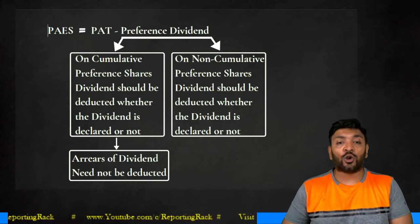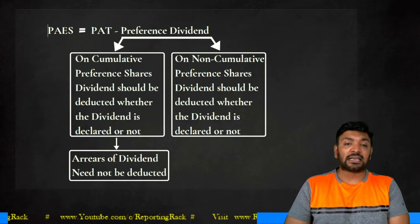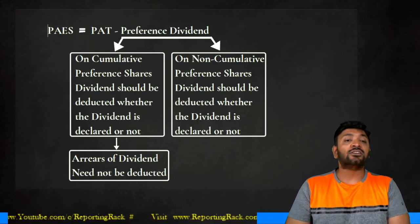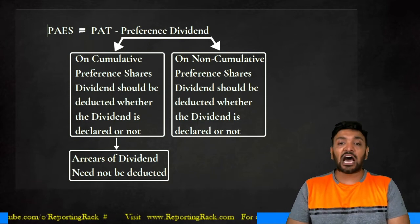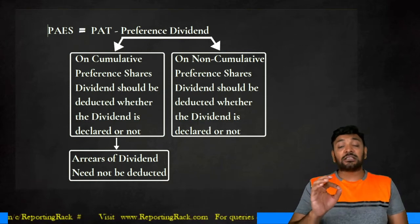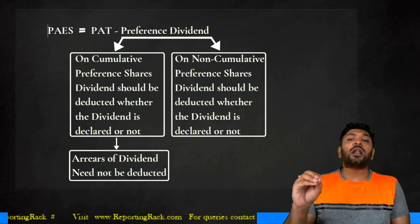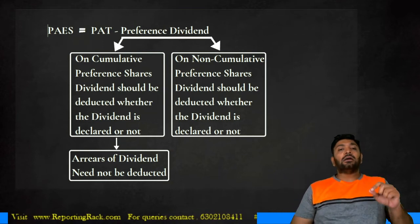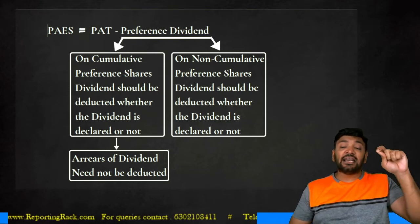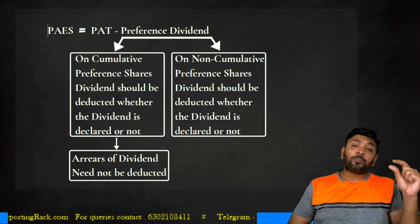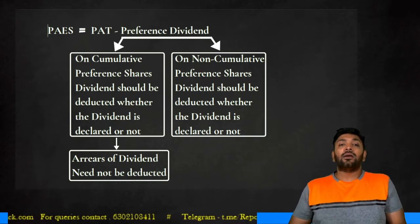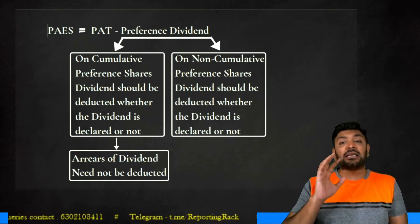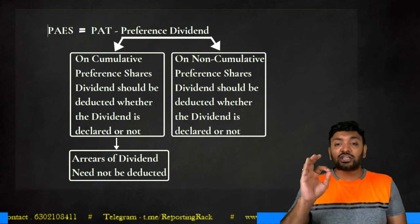Please make the correction in your notes: for non-cumulative preference shares, deduct only if the dividend is declared. If not declared, you are not supposed to deduct it from profit after tax. Arrears of preference dividend for cumulative preference shares should not be deducted again. Now, what is your profit after tax? It should be the amount appearing in the statement of P&L after deduction of provision for tax.